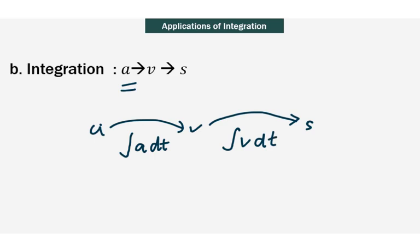Bear in mind that you are actually doing an indefinite integration. Hence, you will be getting what we call an arbitrary constant. So in many cases, there will be information given to you — most of the time it will be when t is equivalent to 0 seconds, s is equivalent to 0 meters, or any other information which will help you in getting the arbitrary constant c.